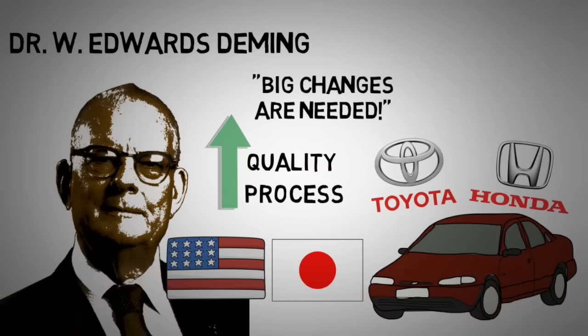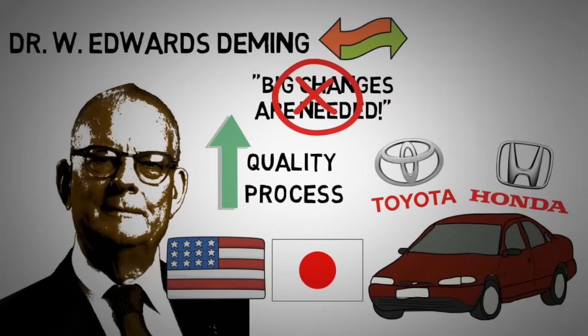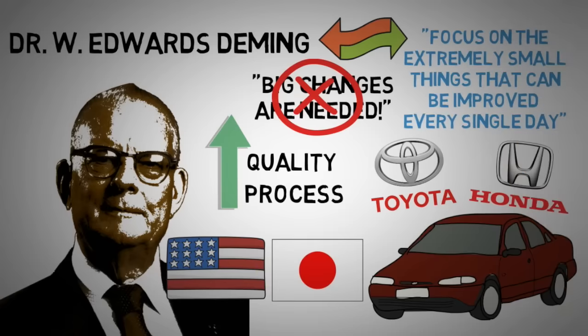And Deming argued against popular belief that change has to be big and bold in order to have an effect. And he was convinced of the opposite. Don't change too much at once, but instead focus on the extremely small things that can be improved upon every single day.